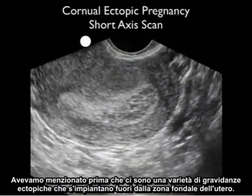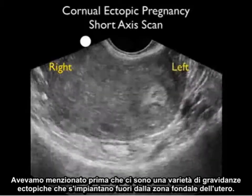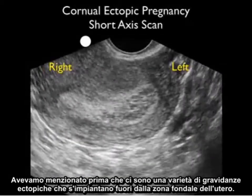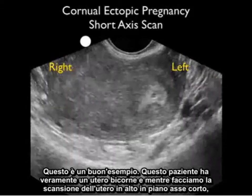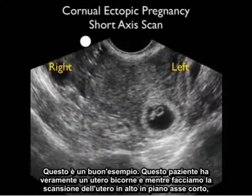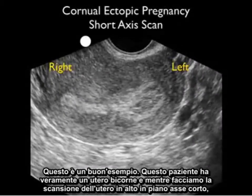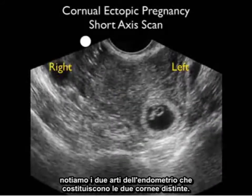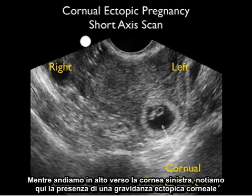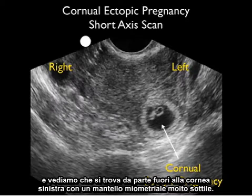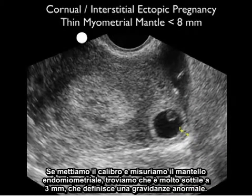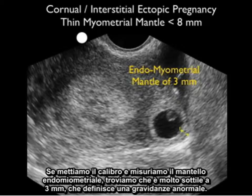There are variants of ectopic pregnancies that implant outside the fundal region of the uterus in an aberrant location. This patient has a bicornuate uterus, and scanning in a short-axis plane we notice the two limbs of endometrium forming the two distinct cornua. Going up the left cornua, we notice the presence of a corneal ectopic pregnancy located way out to the left cornua with a very thin myometrial mantle. Placing calipers down to measure the endomyometrial mantle, we find it is very thin at three millimeters, defining an abnormal pregnancy.